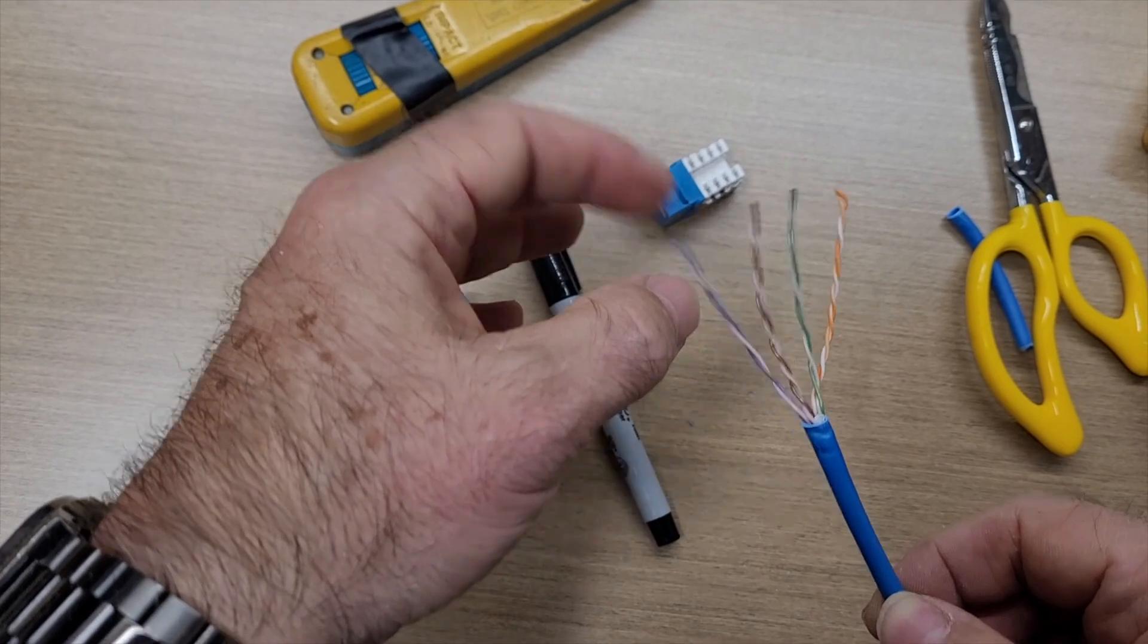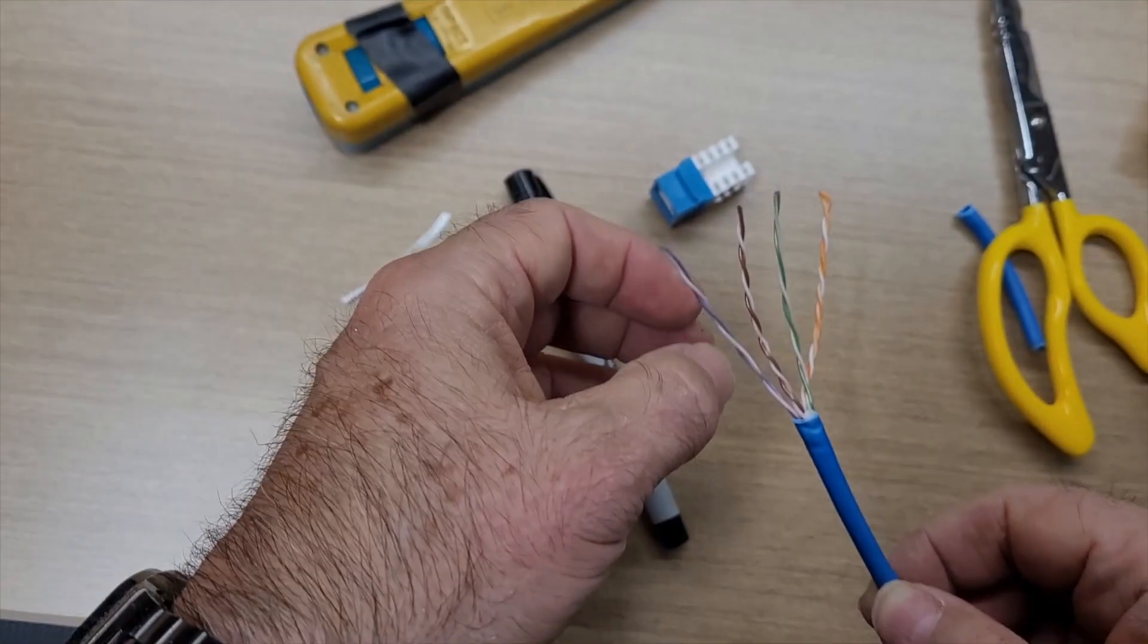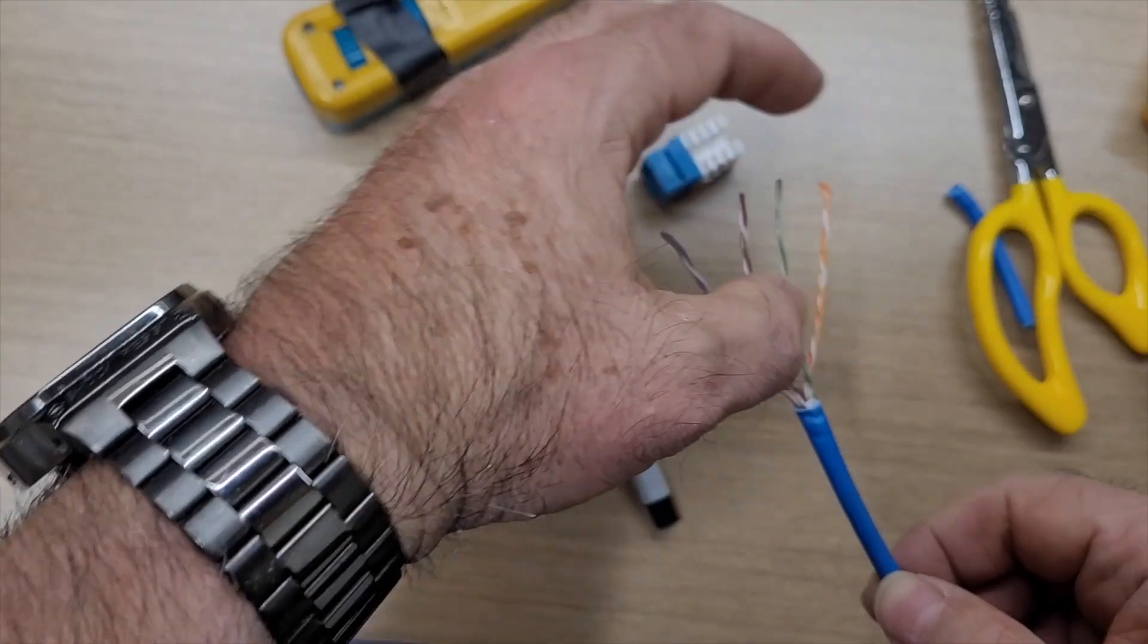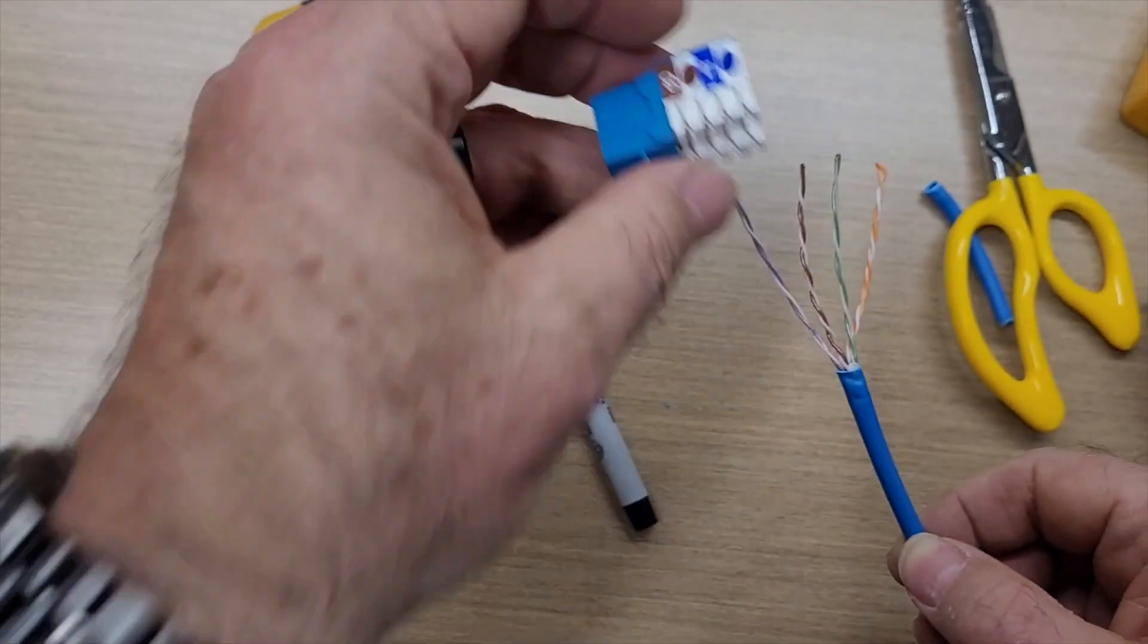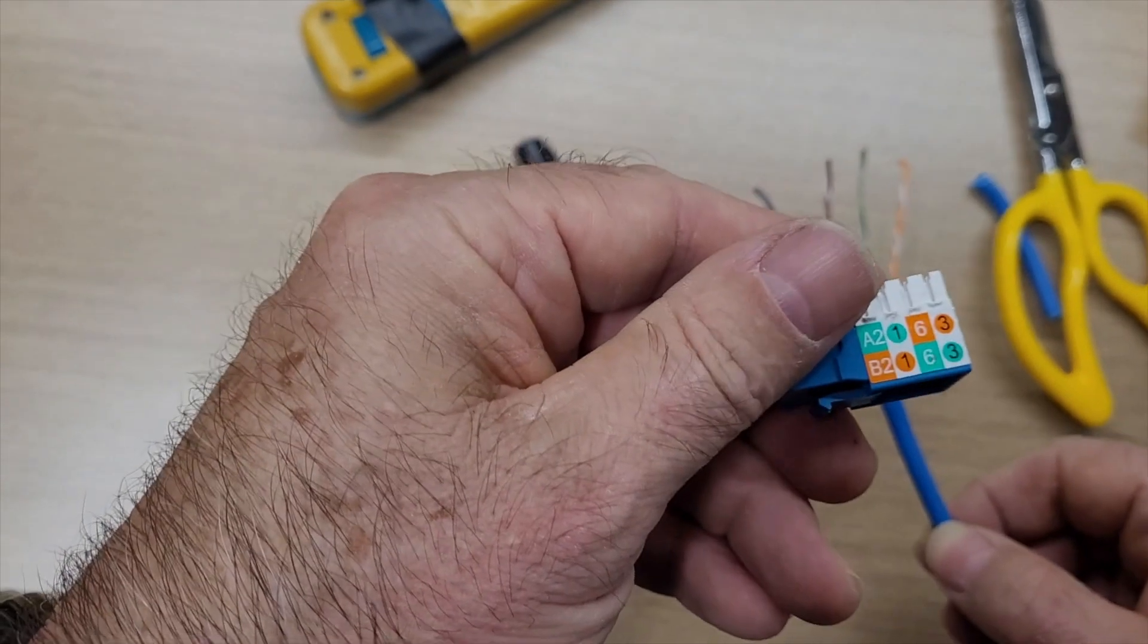And they're paired, meaning that these two are twisted, these two are twisted, etc. So what happens is you have a blue-white, an orange-white, a green-white, a brown-white, and they map out to the colors on the side of your jack.